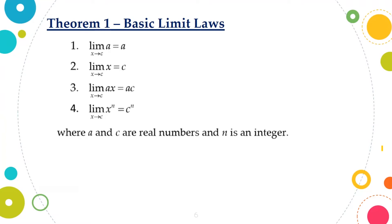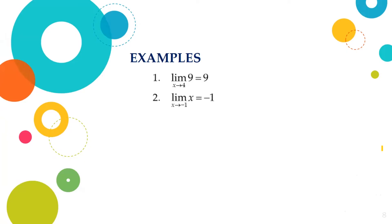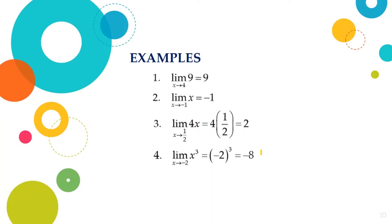Let us have some examples applying Theorem 1. The limit of 9 as x approaches 4 is equal to 9, because 9 is a constant number, therefore its limit will be equal to itself. The limit of x as x approaches negative 1 is equal to negative 1, since we only have the variable x, then its limit will be equal to c. The limit of 4x as x approaches 1 half will be equal to 4 times 1 half, wherein this is a and this is c, which is equal to 2. The limit of x cubed as x approaches negative 2 is equal to negative 2 cubed, which is equal to negative 8.